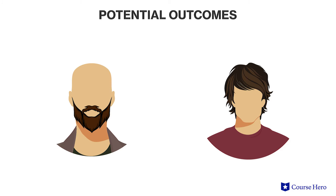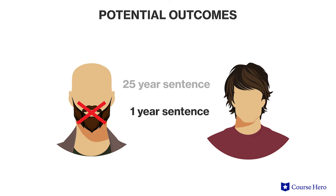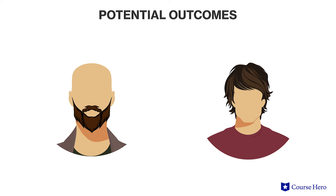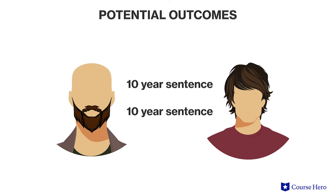However, if they keep quiet and their partner confesses, the partner will only get one year while the silent one receives 25 years. If both confess and save the police the cost of a trial, each of them will get only a 10-year sentence.